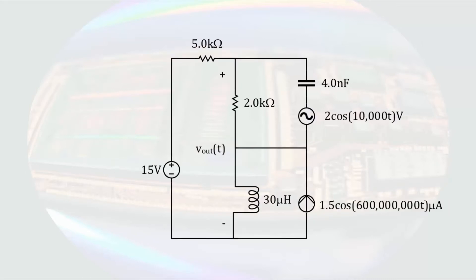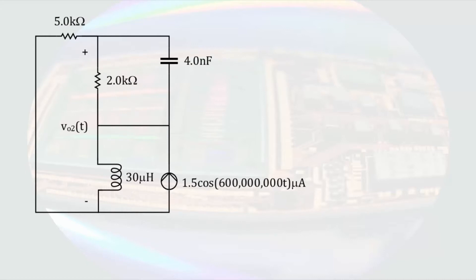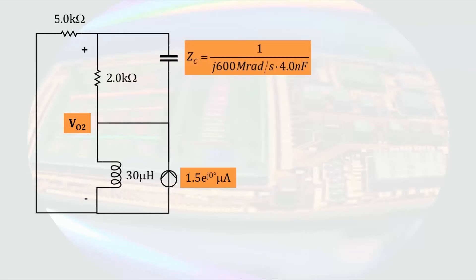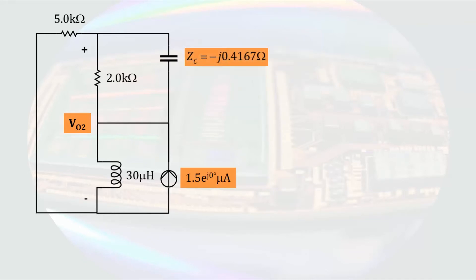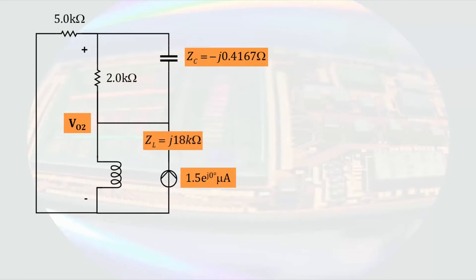We have the contribution from one more source to analyze. To look at the contribution of the 1.5 microamp current source, we turn off both voltage sources by replacing them with wires. We are left with a circuit that has a sinusoidal source, which we convert to the phasor domain. The current source is rewritten with a magnitude of 1.5 microamps and no phase angle. The 4 nanofarad capacitor becomes an impedance of -j0.4167 ohms, and the 30 microhenry inductor becomes an impedance of j18 kilohms. The circuit is now in the phasor domain.